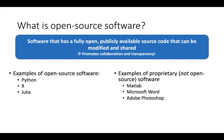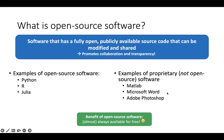Examples of open source software include Python, R, and Julia. Examples of proprietary software include MATLAB, Microsoft Word, and Adobe Photoshop — we can't see their source code. A benefit of most open source software, which is almost always true, is that it's freely available, which is really wonderful.